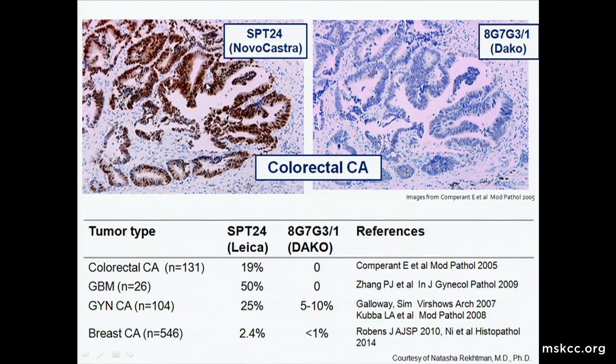Here's another example of a tumor staining for TTF-1 using the SPT-24 clone — this is actually a colorectal carcinoma, which is negative with our specific clone. Colorectal carcinomas and GBMs can be positive with the less specific clone. Endometrial and GYN carcinomas can be positive with both clones. We've also seen endometrial tumors that are TTF-1 positive even with our specific clone, as well as breast carcinoma.